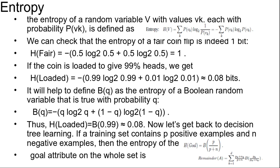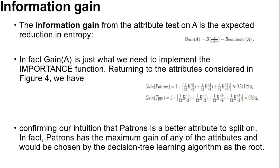The expected entropy remaining after testing attribute A is Remainder(A), which equals the summation of (pK+nK)/(p+n) times B(pK/(pK+nK)) for k from 1 to d. The information gain from the attribute test on A is the expected reduction in entropy. Gain(A) equals B(p/(p+n)) minus Remainder(A).